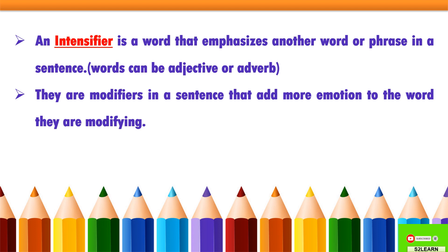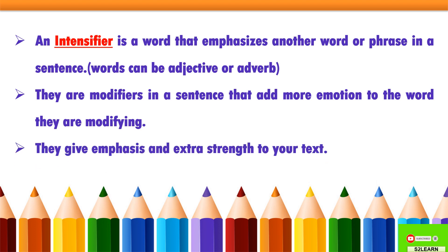For example, take the word 'smart' — this is an adjective. If I want to modify it and add more emotion to that particular word, I will write 'very smart.' So that means I am emphasizing that particular word. Now we will understand this further with the help of examples. They give emphasis and extra strength to your text.